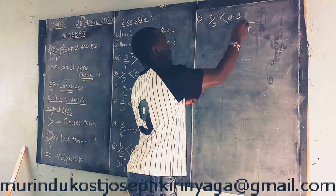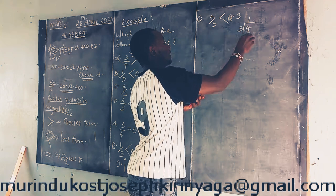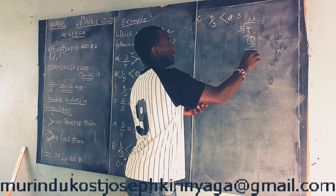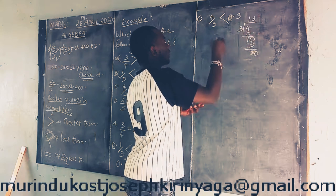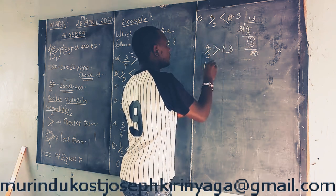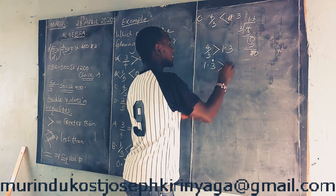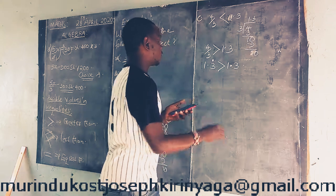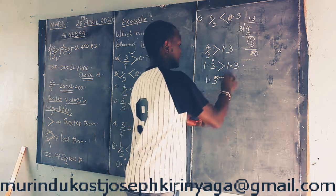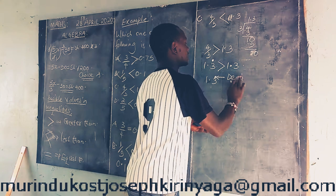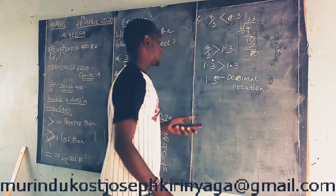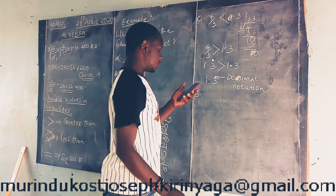3 goes into 4 one time because of 3, remainder 1, then we get 1.33 recurring. So 4 over 3 should be greater than 1.3 because 1.33 is recurring. When you put a decimal point on top of the number that is recurring, that is what we call decimal notation — a symbol showing a number that is recurring. So if we go to choice D, obviously this should be the correct answer.